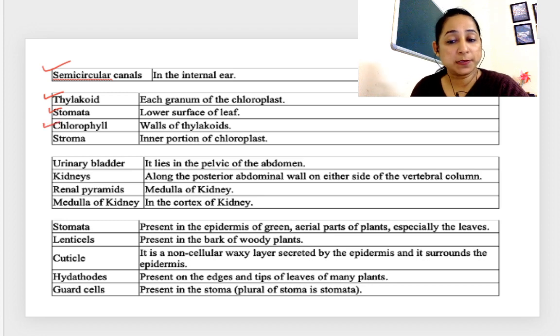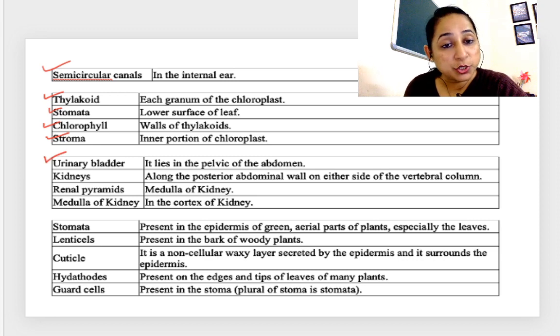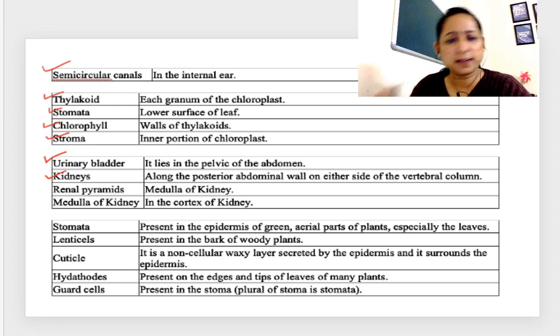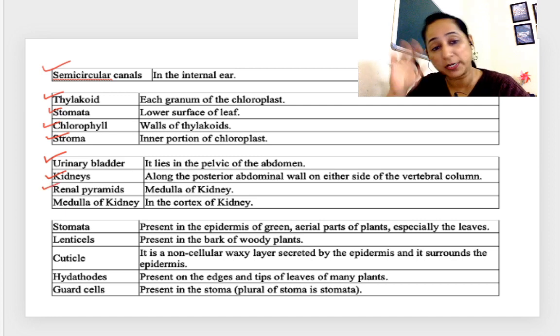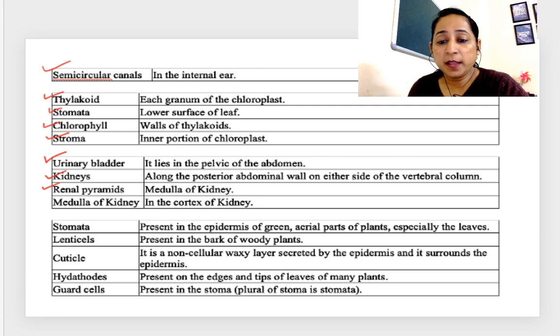Semicircular canals, inner ear. Thylakoids, each grana of chloroplast. Stomata, lower surface of the leaf. Chlorophyll, walls of thylakoid. Stroma, inner portion of chloroplast. Urinary bladder, pelvic region of the abdomen. Kidneys, along the posterior abdominal wall. Renal pyramids, in the sectional view of kidney, medulla of the kidney.